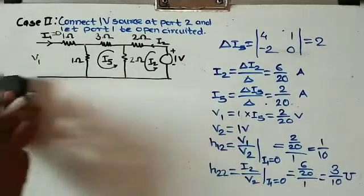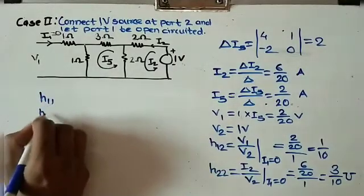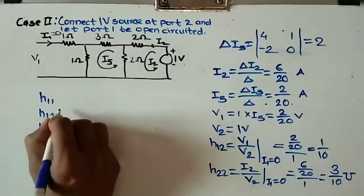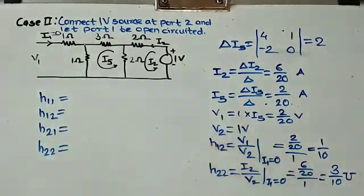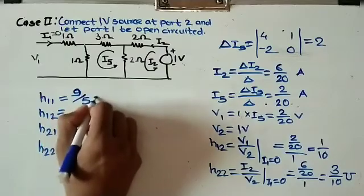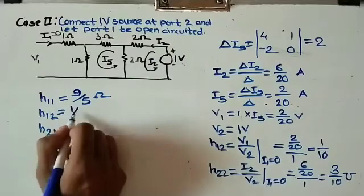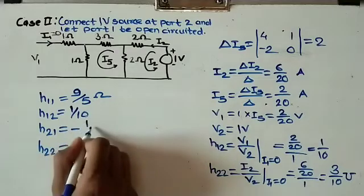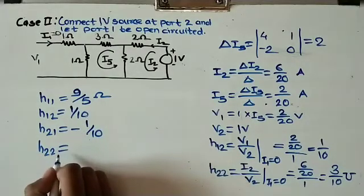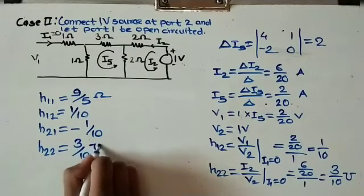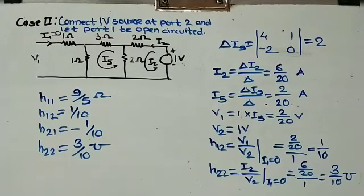Combining all results: h11 equals 9/5 ohms, h12 equals 1/10 (no unit), h21 equals minus 1/10 (no unit), and h22 equals 3/10 siemens. In this way we can find all h-parameters. Thank you.